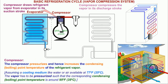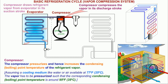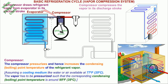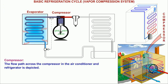Compressor: The compressor pressurizes and hence increases the condensing — that is boiling point temperature — of the refrigerant vapor. Assuming a cooling medium like water or air available at 77 degrees Fahrenheit or 25 degrees Celsius, the vapor has to be pressurized such that the corresponding condensing, that is boiling point temperature, is around 95 degrees Fahrenheit or 35 degrees Celsius. The flow path across the compressor in the air conditioner and refrigerator is depicted.